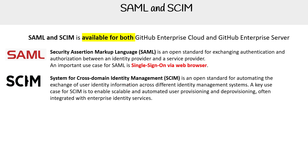Then you have SCIM, which stands for System for Cross-Domain Identity Management. It's an open standard for automating the exchange of user identity information across different identity management systems. A key use for SCIM is to enable scalable and automated user provisioning and deprovisioning, often integrated with enterprise identity services.